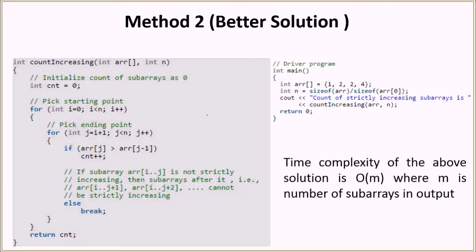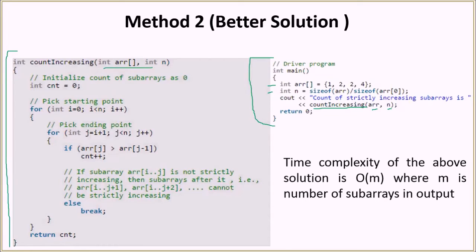In the driver method, we have an array, we calculate the size of the array, and then we call the count_increasing method, passing the array and its size. In this method, count_increasing takes the array and its size as arguments. We have a variable count which we initialize to zero — this will be the result we return at the end.